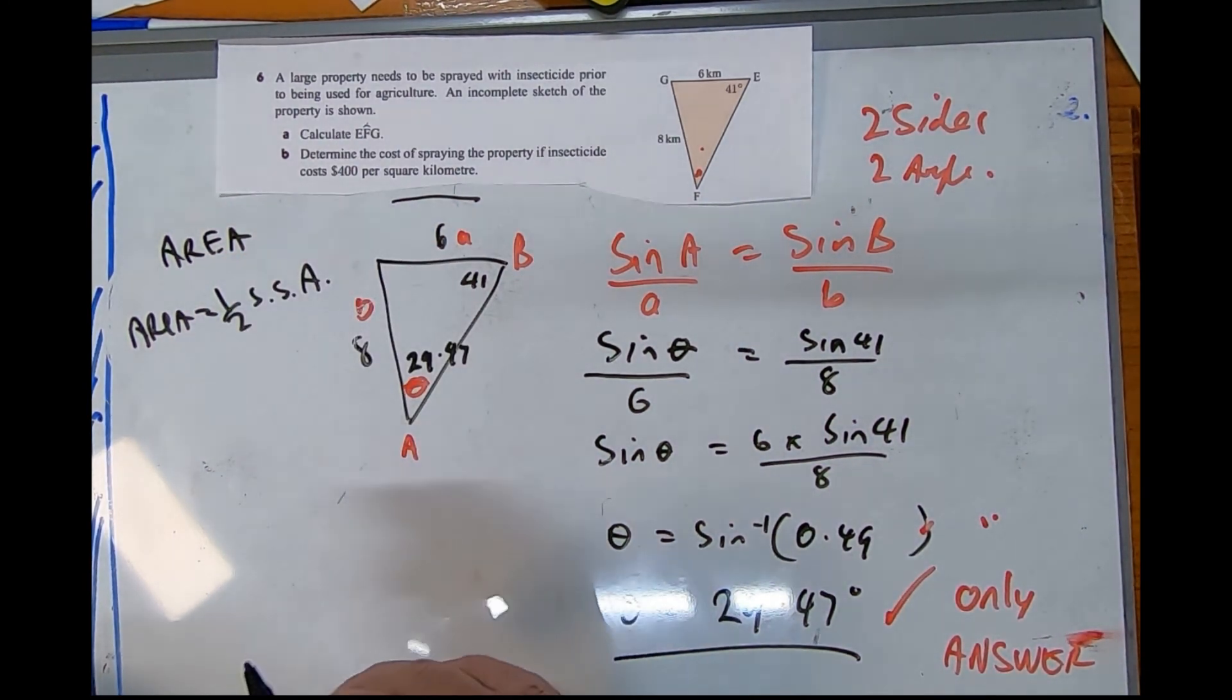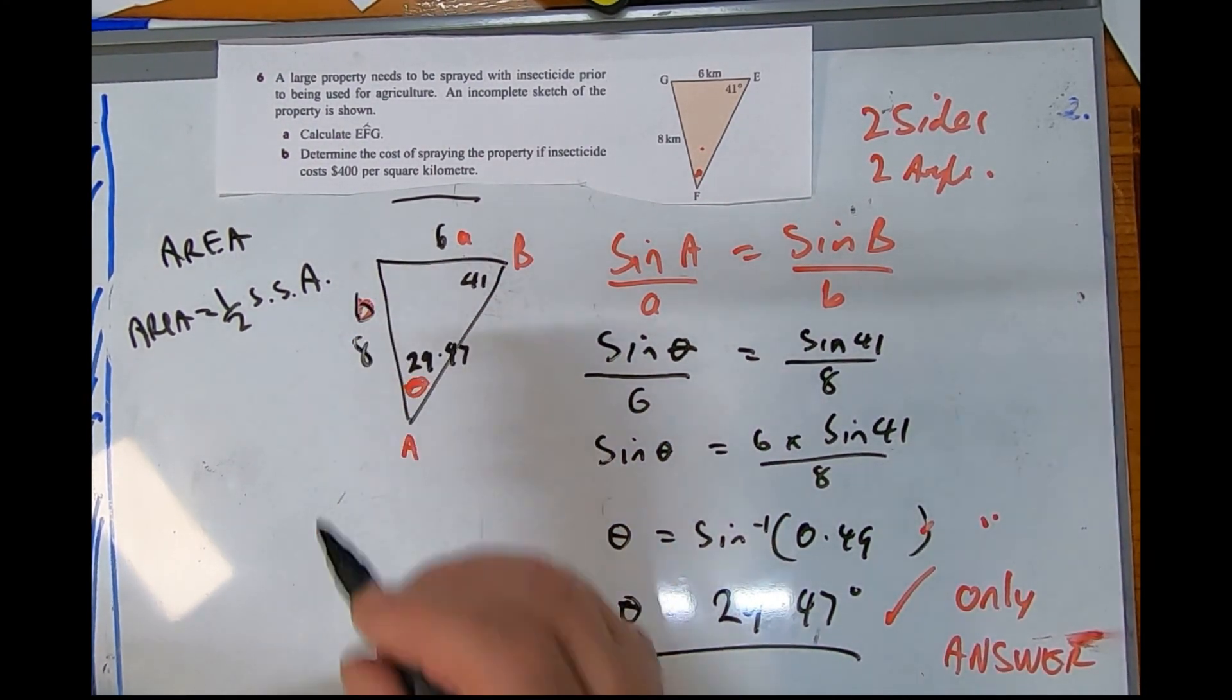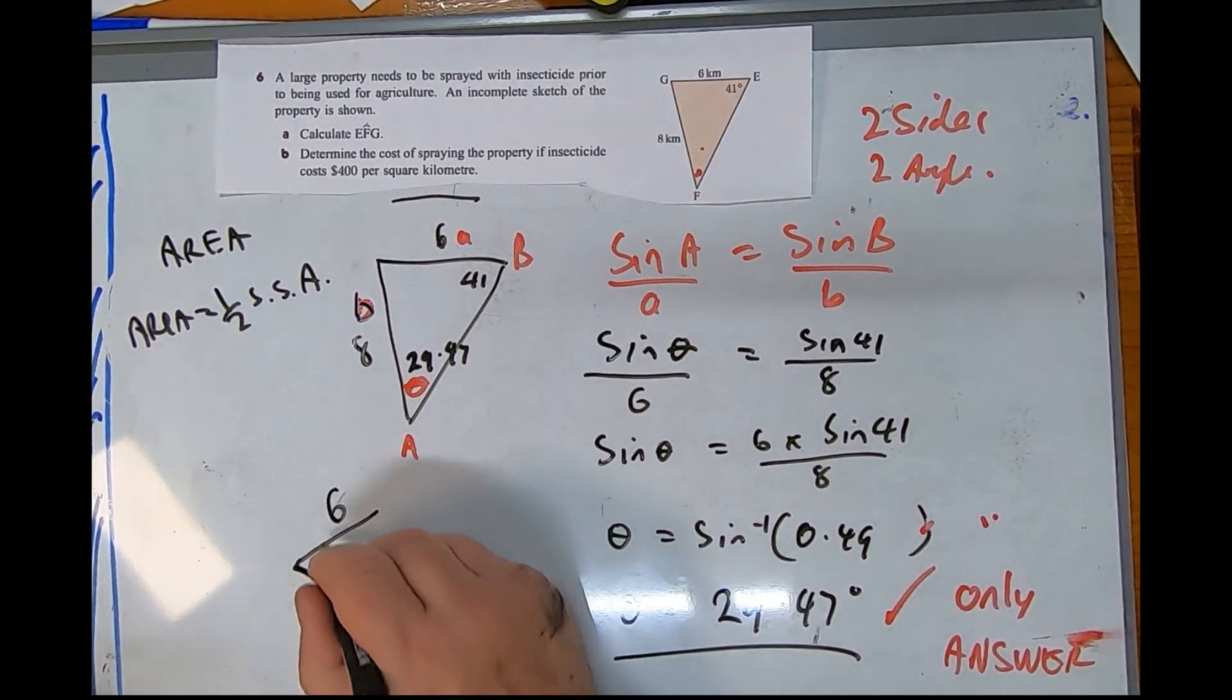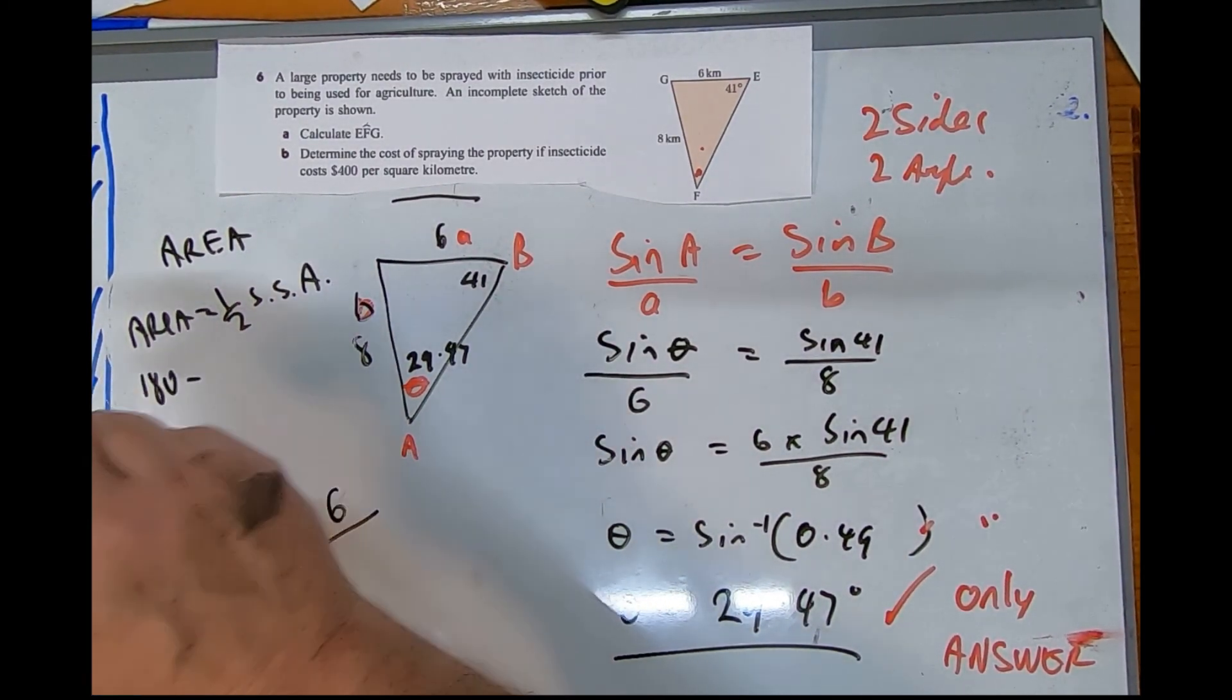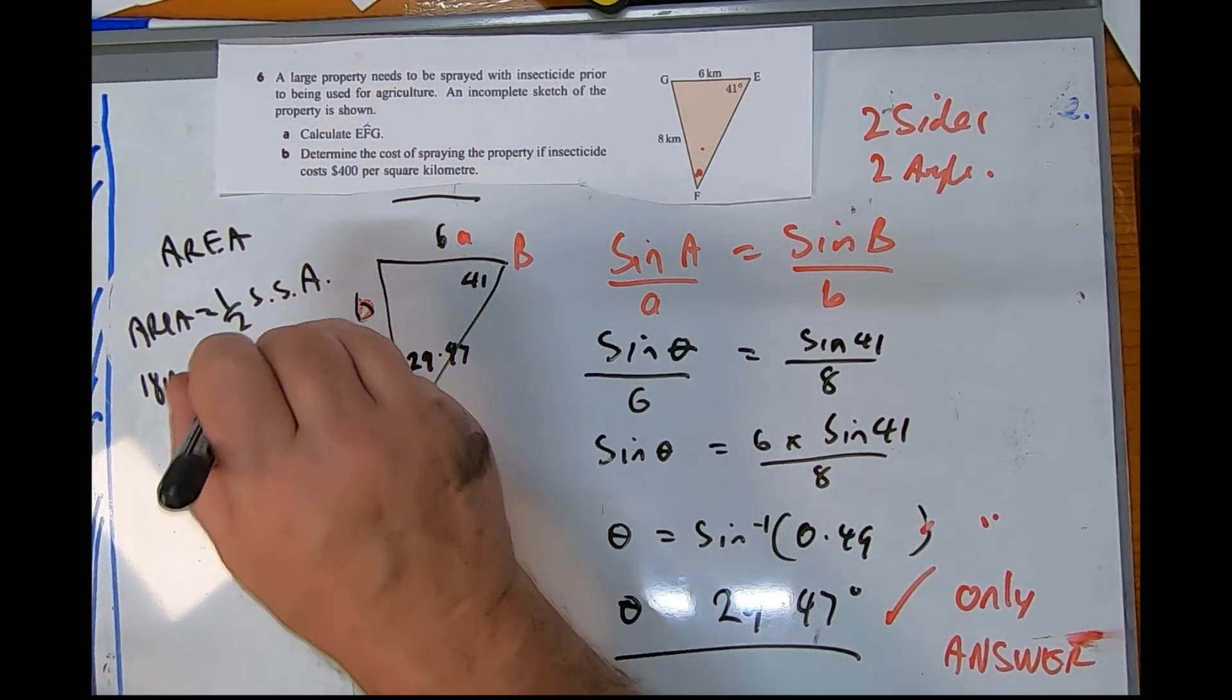Back in the day, area equals one half times a side times a side times the angle in between. Now I can see from this picture that we're going to have to have another little think about this, because we need the six and the eight and this angle in here.